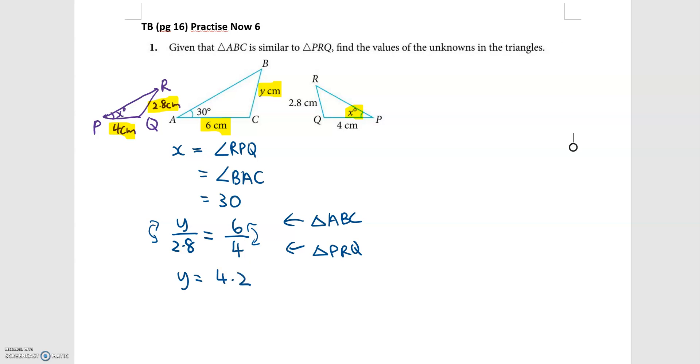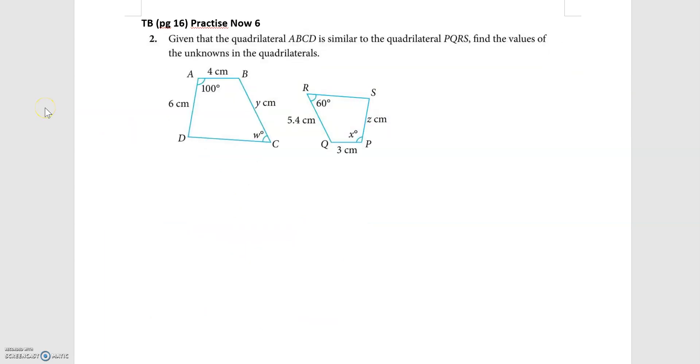I will get 4.2 cm. So the value of y is actually 4.2. So I just need to sum it off. So x is 30, y is 4.2 for this question 1. We will now go on to question 2.